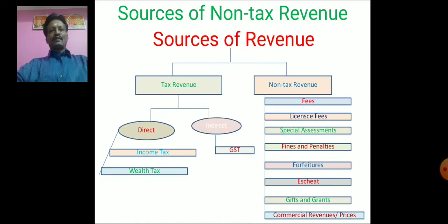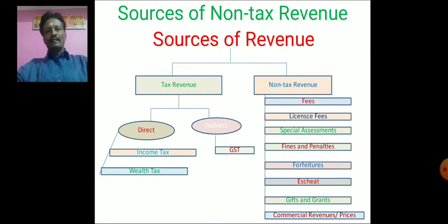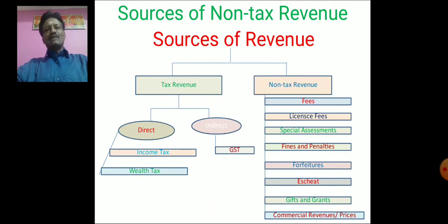There are different sources of revenue to the government. The sources are classified into two: one is tax revenue and the other source is called non-tax revenue. Tax is a compulsory levy made and collected by the government from the people. The taxpayer does not expect any direct benefit from the government. Tax revenue is of two types: direct tax revenue and indirect tax revenue.